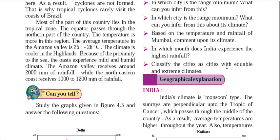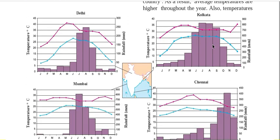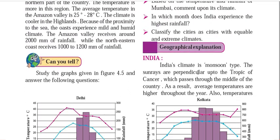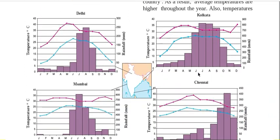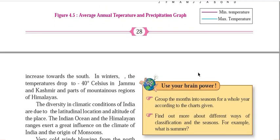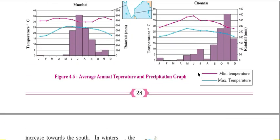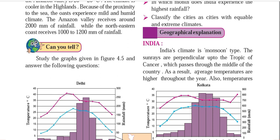Classifying cities as equitable and extreme climates: Kolkata, Mumbai, and Chennai have equitable climates, while Delhi has an extreme climate — as already discussed, due to its continental location with no coastal moderation. Now let's see the geographical explanation behind all these climatic conditions in India.